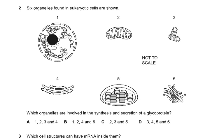Question 2: Six organelles found in eukaryotic cells are shown — the nucleus, mitochondrion, centrioles, rough endoplasmic reticulum, chloroplast, and Golgi apparatus. Which are involved in the synthesis and secretion of a glycoprotein? The Golgi has to be there. The nucleus also has to be there because DNA to mRNA — transcription has to take place in the nucleus.